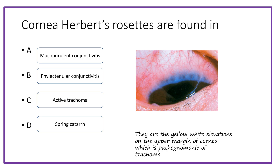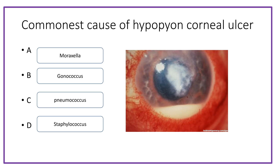The corneal Herbert's pits are found in mucopurulent conjunctivitis, phlyctenular conjunctivitis, active trachoma, or vernal catarrh. They are usually found in active trachoma because they are white elevations on the upper margin of the cornea, which is pathognomonic of trachoma. The commonest cause of hypopyon corneal ulcer is Moraxella, gonococcus, pneumococcus, or Staphylococcus. The answer is pneumococcus.